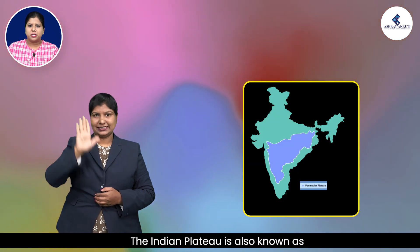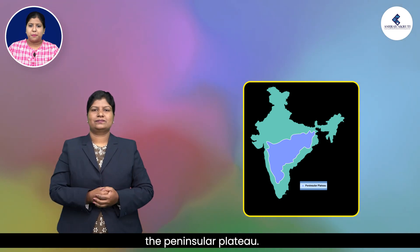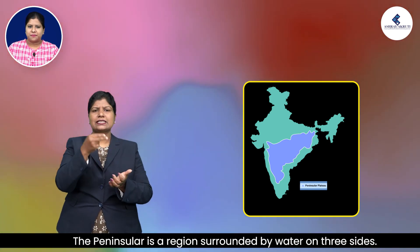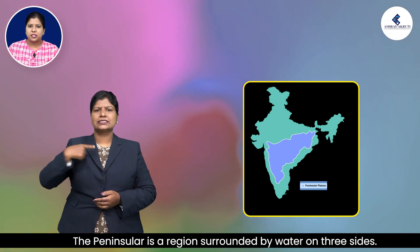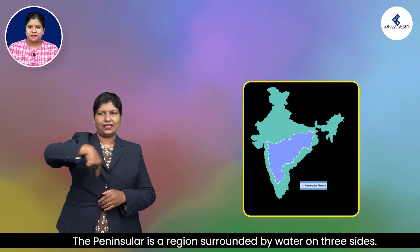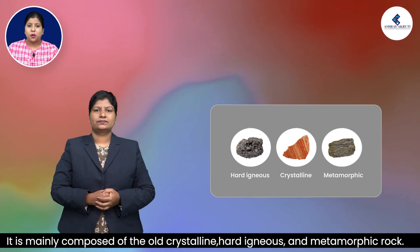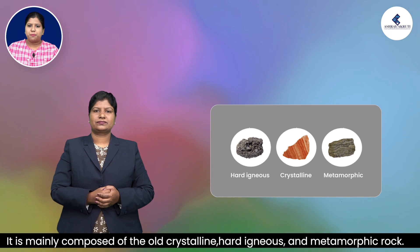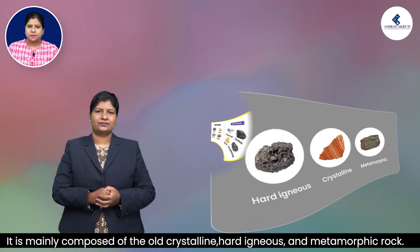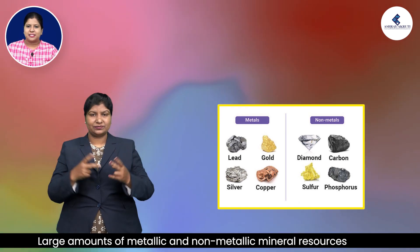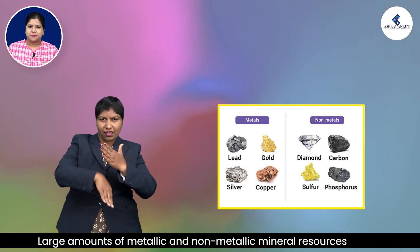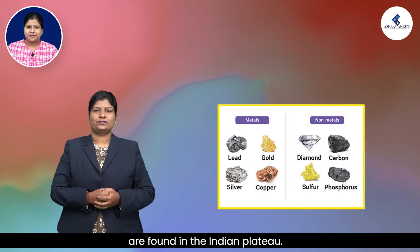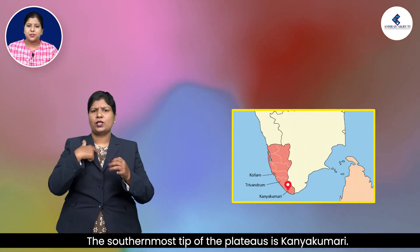The Indian Plateau is also known as the Peninsular Plateau. The Peninsula is a region surrounded by water on three sides. It is mainly composed of old crystalline, hard igneous and metamorphic rock. Large amounts of metallic and non-metallic mineral resources are found in the Indian Plateau. The southernmost tip of the plateau is Kanyakumari.